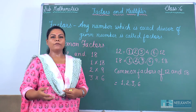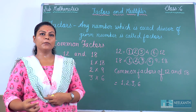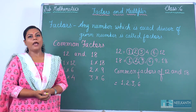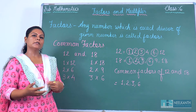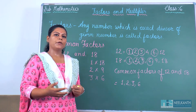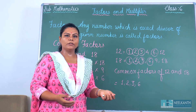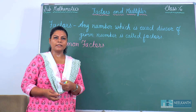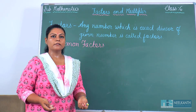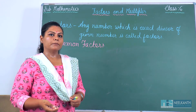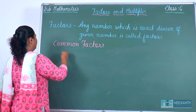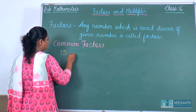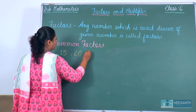Now we will move forward to find common factors among 3 numbers. Three questions are given and we have to find the common factors among these three numbers. Suppose our question is 15, 20 and 30.